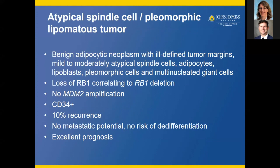The first tumor is atypical spindle cell pleomorphic lipomatous tumor — a new entity in this edition. It's a benign adipocytic tumor with ill-defined tumor margins, mild to moderately atypical spindle cells, adipocytes, some lipoblasts, pleomorphic cells, and variable multinucleated giant cells. It has loss of RB1, correlating to deletion of the RB1 gene, similar to spindle cell pleomorphic lipoma. It has CD34 expression. Importantly, it does not have MDM2 amplification. 10% will recur locally, no metastatic potential, and no risk of de-differentiation.